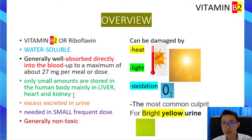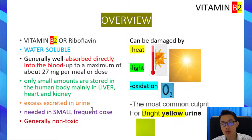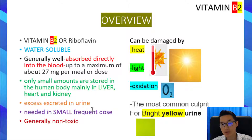Generally, only a small amount of vitamin B2 is stored in the human body, mainly in the liver, the heart, and the kidney. Any excess may be filtered by the kidney and excreted in the urine. Therefore, it is better to take a small amount of vitamin B2 frequently than to take a one-off large dose, as any excess may be wasted in the toilet.